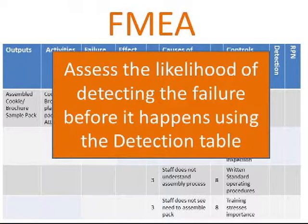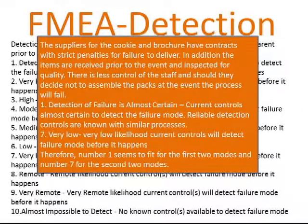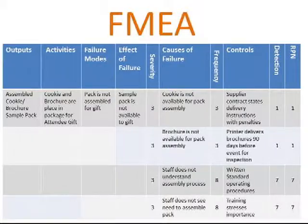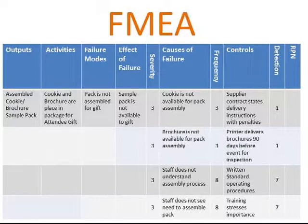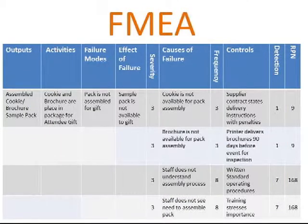The higher the RPN, the more risk is associated with this defect. The maximum possible RPN is 1,000. A rating of 1,000 would mean that the process fails every time, and when it fails, it is catastrophic, but the failure isn't noticeable until after it has occurred. The FMEA rating system allows exhibitors to identify the ways the process fails to deliver a great purchase experience for attendees, the effects of defects and errors on attendees, the likelihood of an error to occur, and even the ability to detect these errors before they happen.